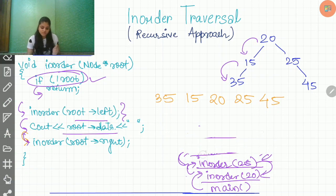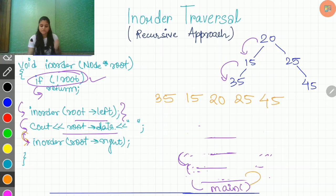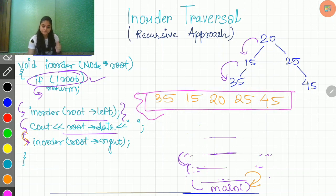Now when the control comes back to this, we had called root.right. So this is also done. So the control will go back to root 20. So we are done with this too. So the control will again go back to the main function and the remaining part of the main will be executed. And as you can see, we have already got our answer, the in-order traversal of the tree, which is this one.